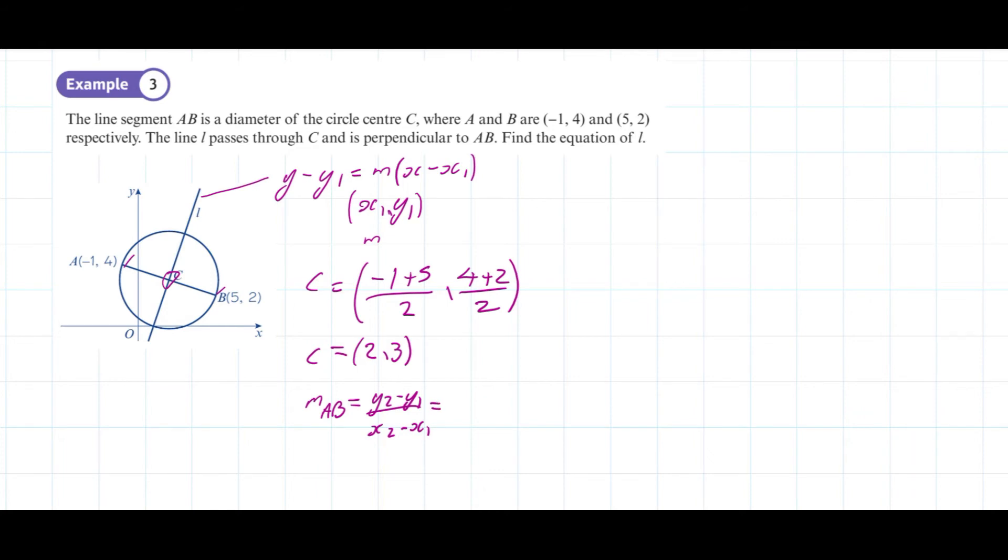is the difference in the y-coordinates, y2 minus y1, divided by the difference in the x-coordinates, x2 minus x1. So we're going to go (2 - 4)/(5 - (-1)), which gives us a gradient of -1/3.